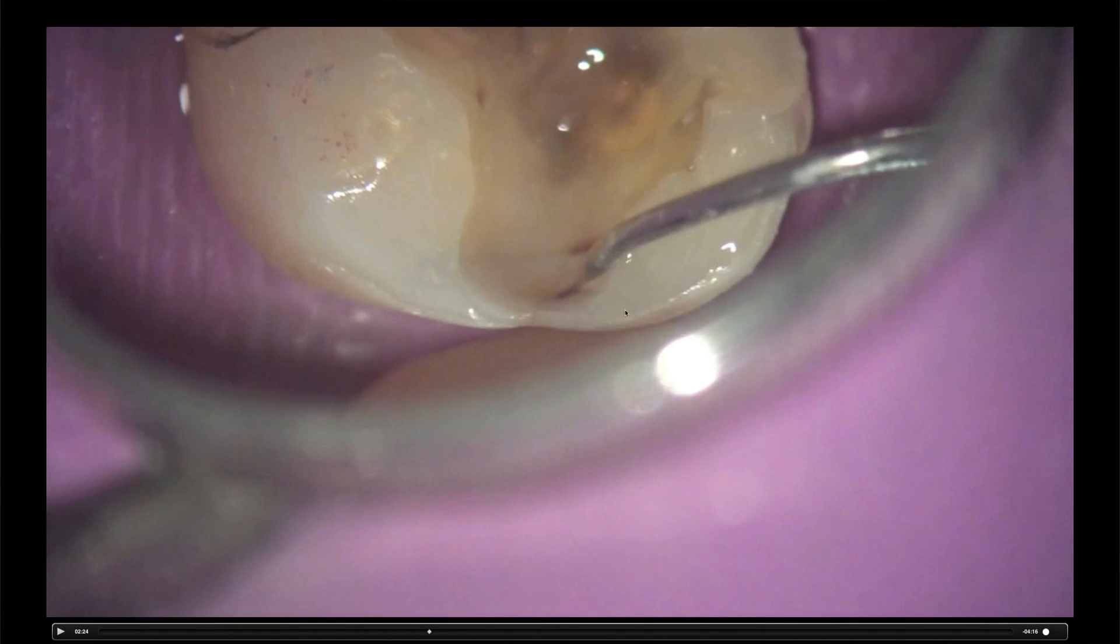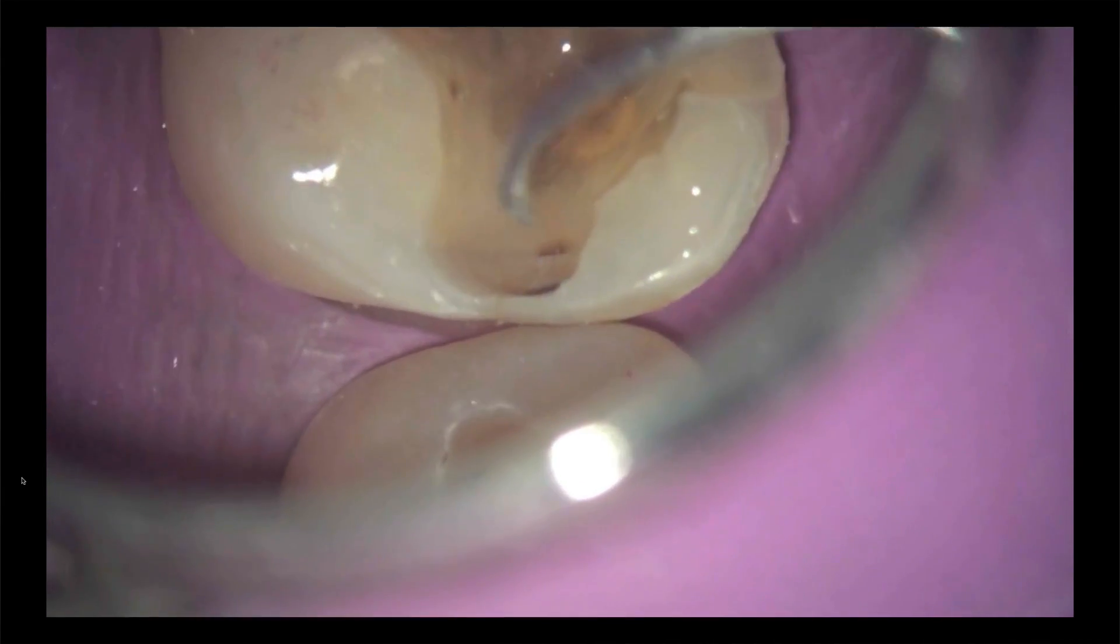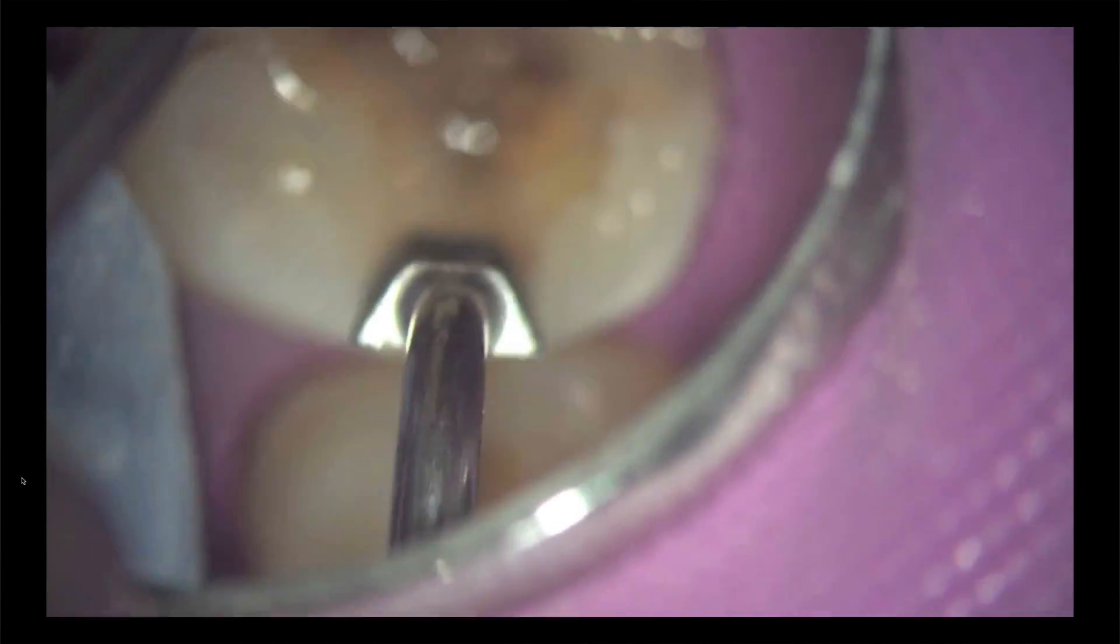There's some decay on the mesial, the buckle portion of the box or the contact here. So I'm going to have to prep this a little further, but I want to keep it as conservative as possible. So I'm going to try the instrument in first, the sonic prep tip in first, and then see how much I need to prep this with the rotary instrument, which I'll use a KS zero. So you can see there we've got caries. We're going to try in the sonic preparation tip. This is an opposite tip to the one I used on the distal. Obviously I had to switch it out. You can see it needs to be slightly wider. Plus I want to extend this to the buckle anyway, because of the caries.